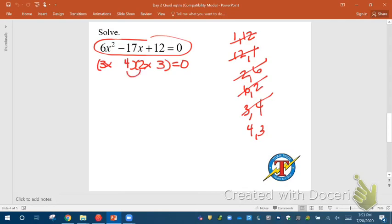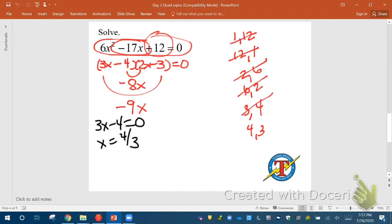The inners multiply to 8x. The outers multiply to 9x. And I need a negative 17, so I'll make them both negative, which means this is a negative and this is a negative. Double check. Two negatives do multiply to a positive 12. Now set each factor equal to 0. If 3x minus 4 equaled 0, add 4, divide by 3, and you'd get x is 4 thirds. If 2x minus 3 equals 0, add 3 and divide by 2, and you get 3 halves. And those are our two answers. Hope you did well.